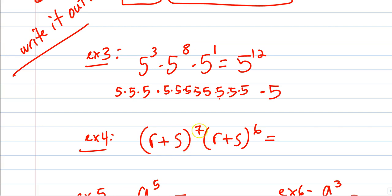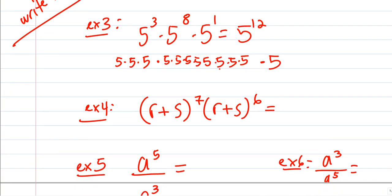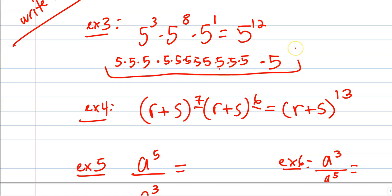If I have (r + s) to the seventh times (r + s) to the sixth, I'm not going to write this one out. We write it out when it's easy so I can handle it when it's harder. The base is (r + s), and how many times am I multiplying it? Seven times and six times gives a total of thirteen. Write it out when it's easy so that when it gets harder, you don't have to ask, what's the rule?